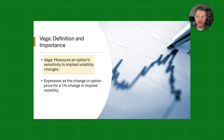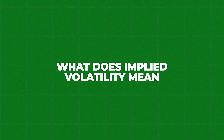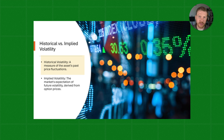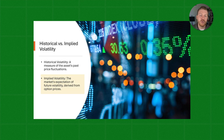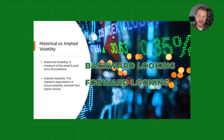Vega measures an option's price sensitivity to changes in implied volatility — but what does implied volatility mean? If we looked at all of the past data of a stock and measured the price fluctuations, that would be historical volatility. Implied volatility is different — it is the market's expectation of future volatility derived from options prices. One measure is backward looking, and the other is forward looking. The Black-Scholes option pricing model is based on the forward-looking estimates that the market implies for future volatility.